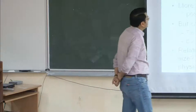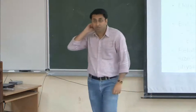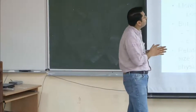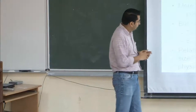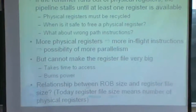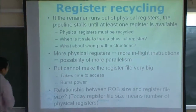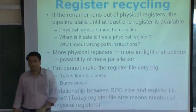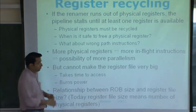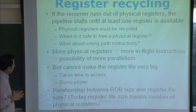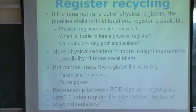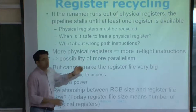So last time we discussed register renaming in detail and how you recycle registers. The final conclusion was that the reorder buffer is a special structure for maintaining the order of instructions, and it is freed when an instruction retires. We also deduced a relationship: if you have more physical registers, you'll have more in-flight instructions in the buffer, and that will allow you to extract more parallelism from the program.